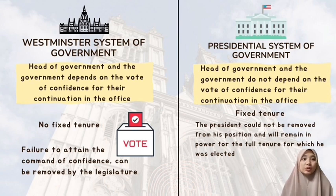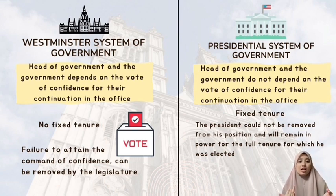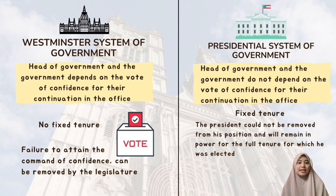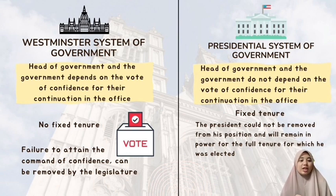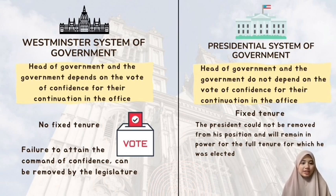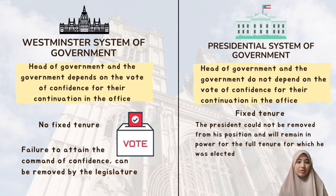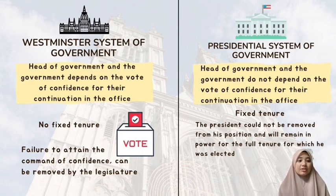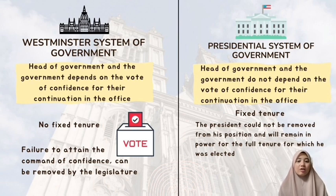In Malaysia, one of the countries that applies the Westminster system, our national legislature has included this method in our Federal Constitution. Article 43 Clause 2 Subsection (a) lists the grounds that the Yang di-Pertuan Agong shall appoint the Prime Minister who, in his judgment, commands the confidence of the majority. This shows that a command of confidence is one of the qualifications needed to hold office as Prime Minister. Meanwhile, Article 43 Clause 4 of the Federal Constitution elaborates on the effects if the Prime Minister ceases to command a vote of confidence. The article states that if a Prime Minister ceases to command the confidence of the majority of the members of the House of Representatives, then unless at his request the Yang di-Pertuan Agong dissolves parliament, the Prime Minister shall tender the resignation of the cabinet.